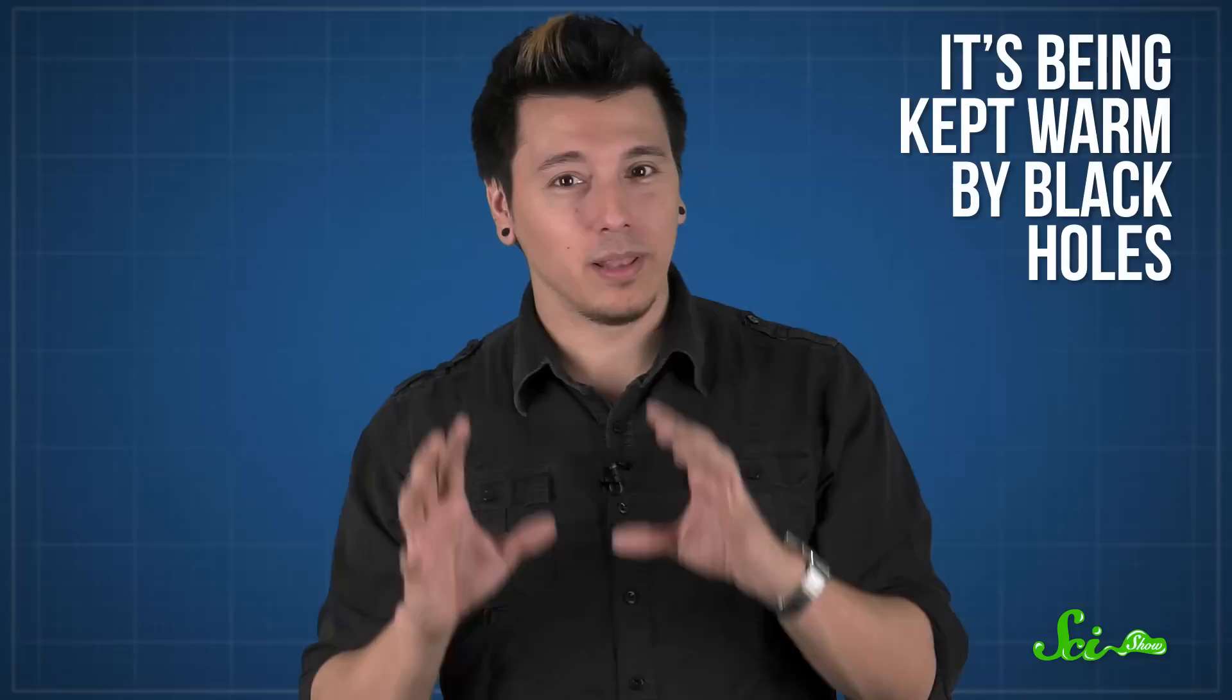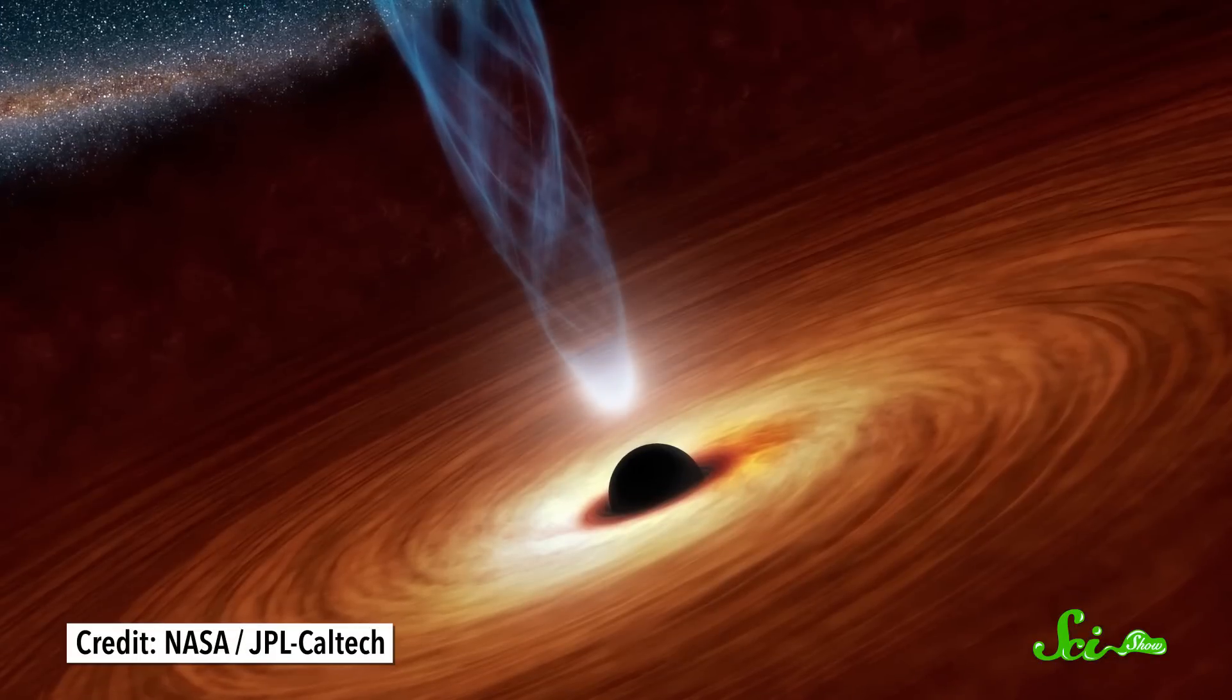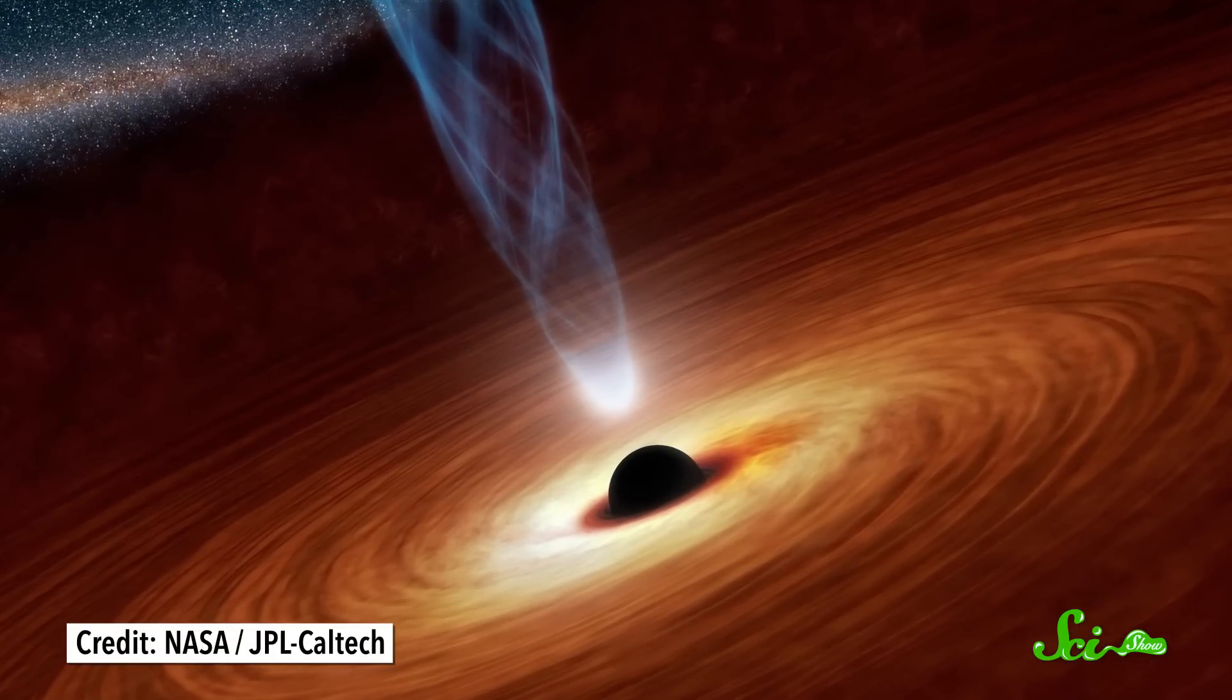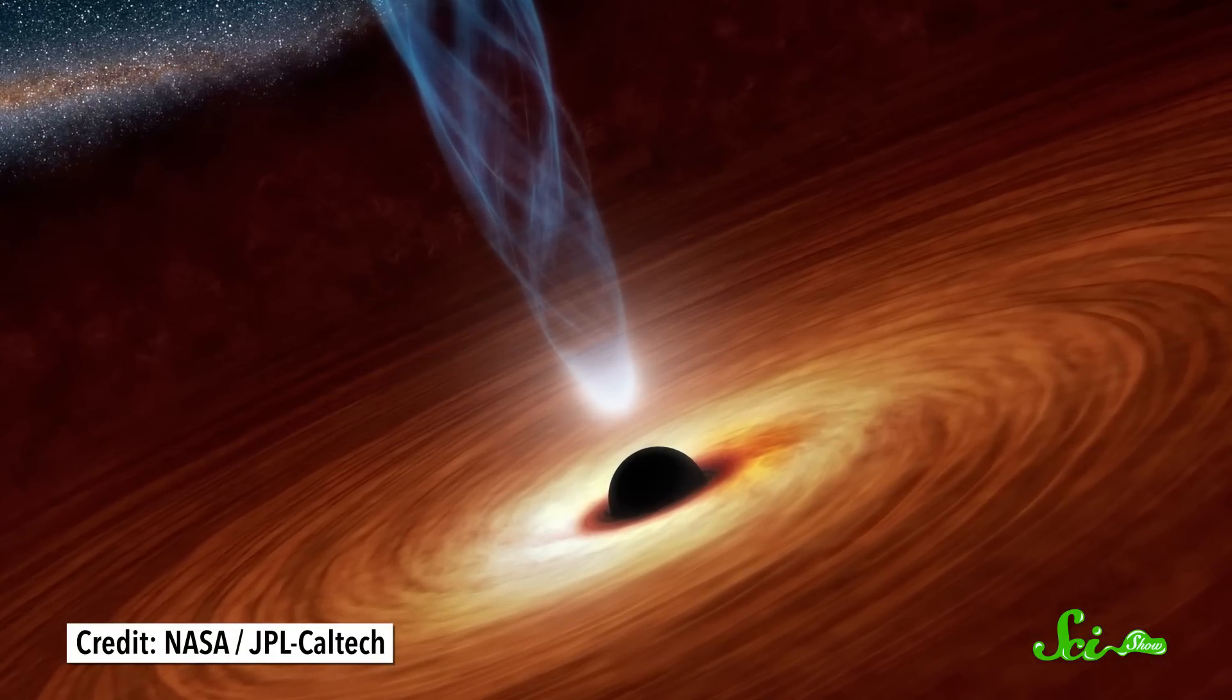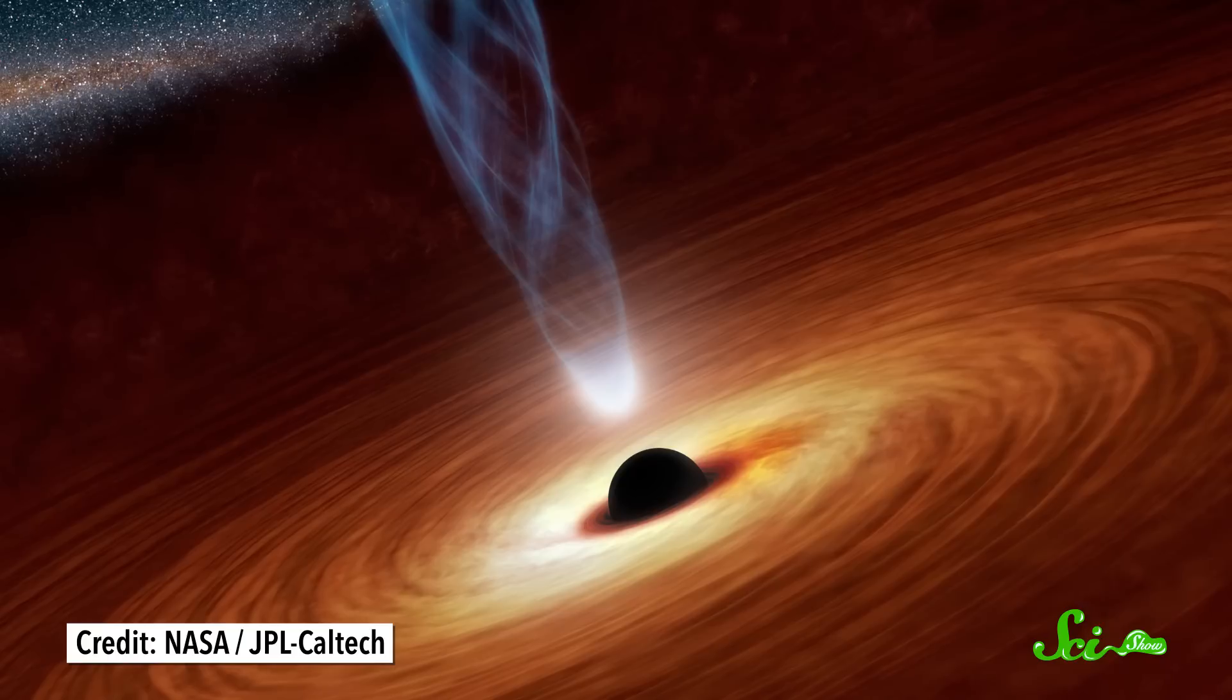But galaxy clusters formed billions of years ago, so you'd think the medium would have cooled down by now. It hasn't, though, because it's being kept warm by black holes. After a black hole's gravity sucks in matter, it gives off energy that's turned into heat. And since a lot of galaxies have black holes at their centers, there are plenty of heat factories to keep the medium at the toasty temperatures created when the cluster formed.